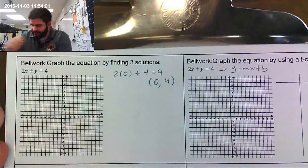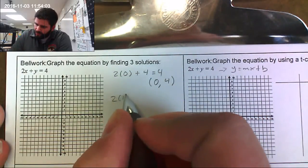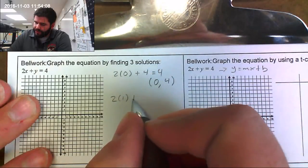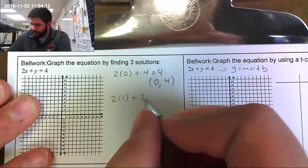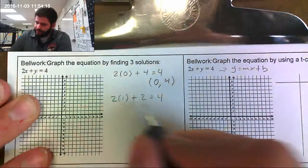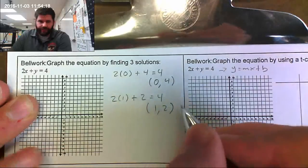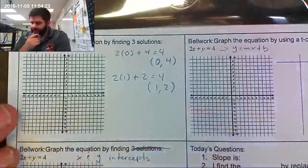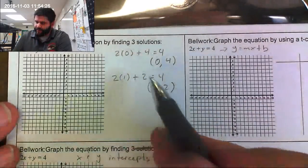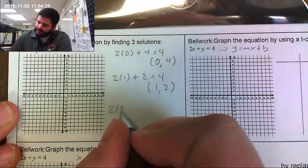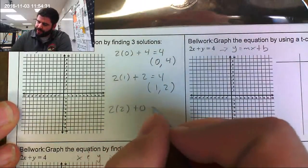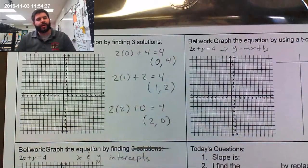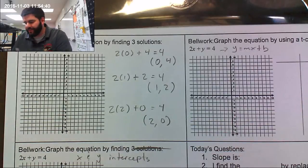For the second ordered pair, if I try two times one, that gives me two, and two plus two equals four. So that gives me the ordered pair one and two. For the third, if y is zero, then two times two plus zero equals four, giving me the ordered pair two and zero. I now have my three ordered pairs.